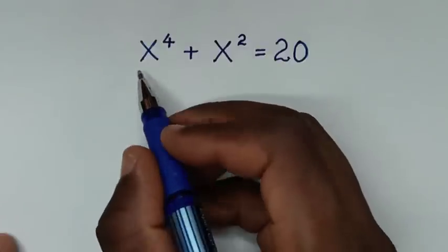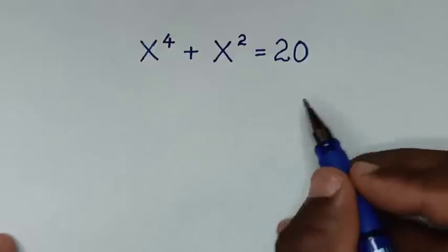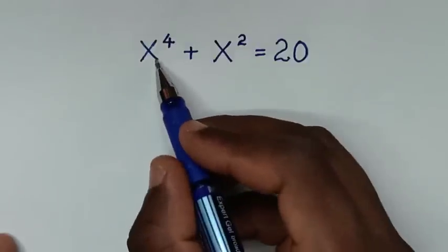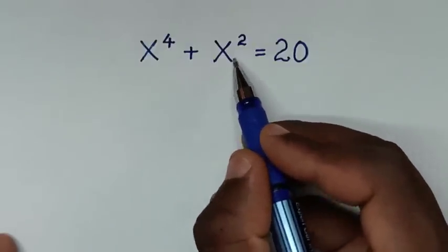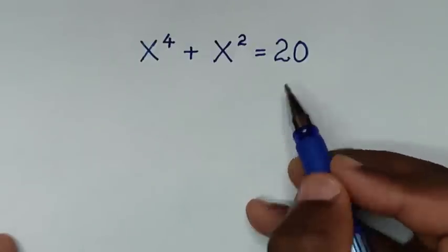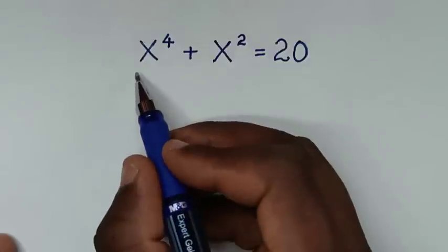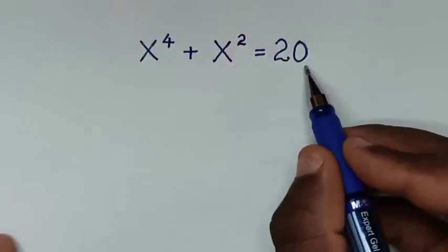Hello, you are welcome to solve this math problem which is x to the power 4 plus x to the power 2 is equal to 20. We need to find the values of x from this equation.